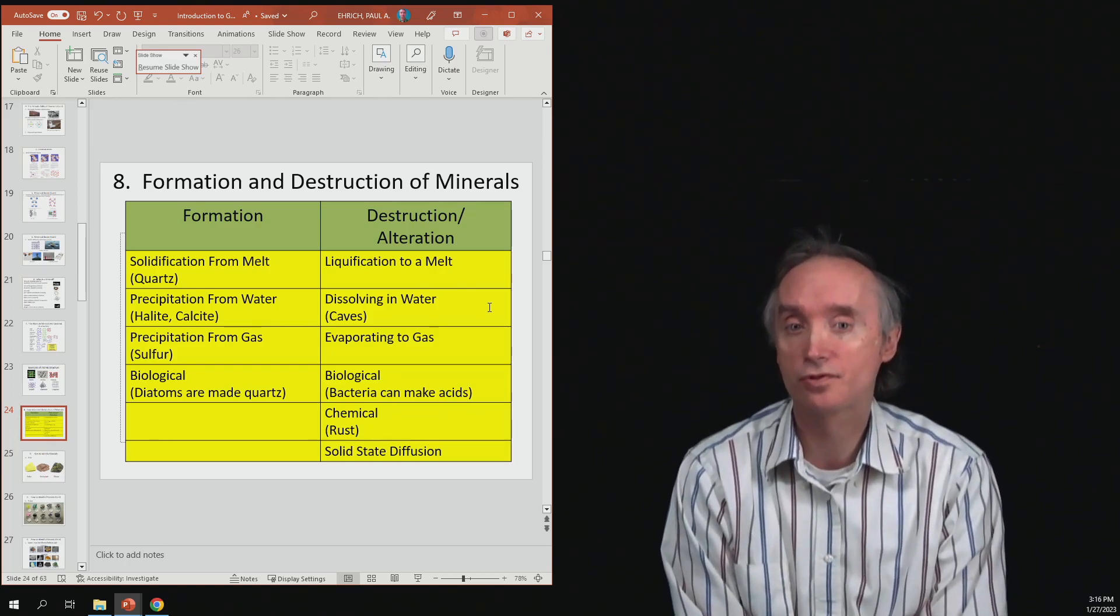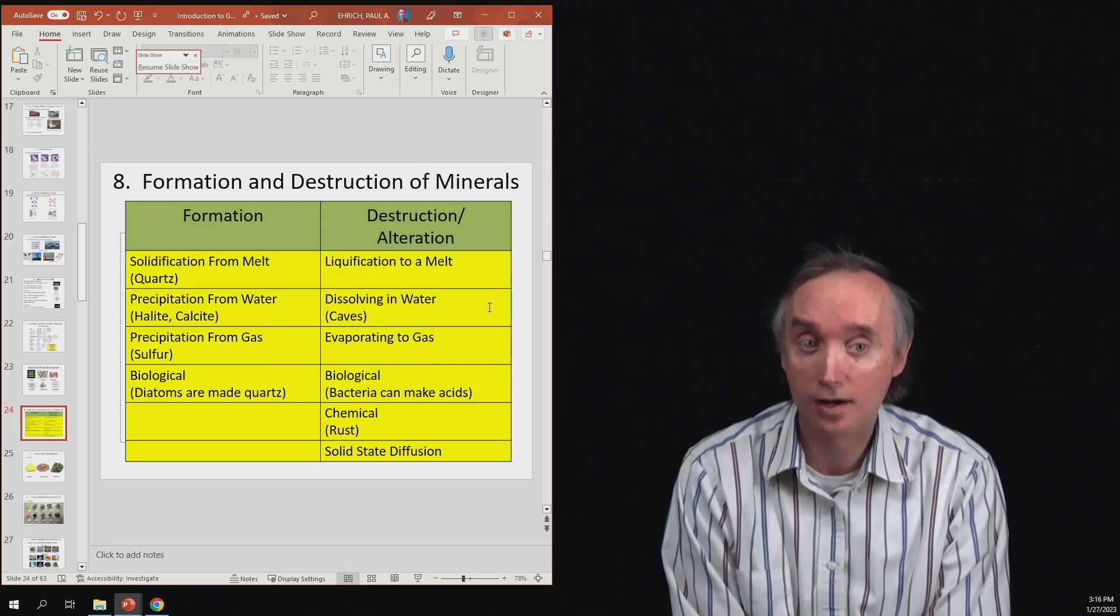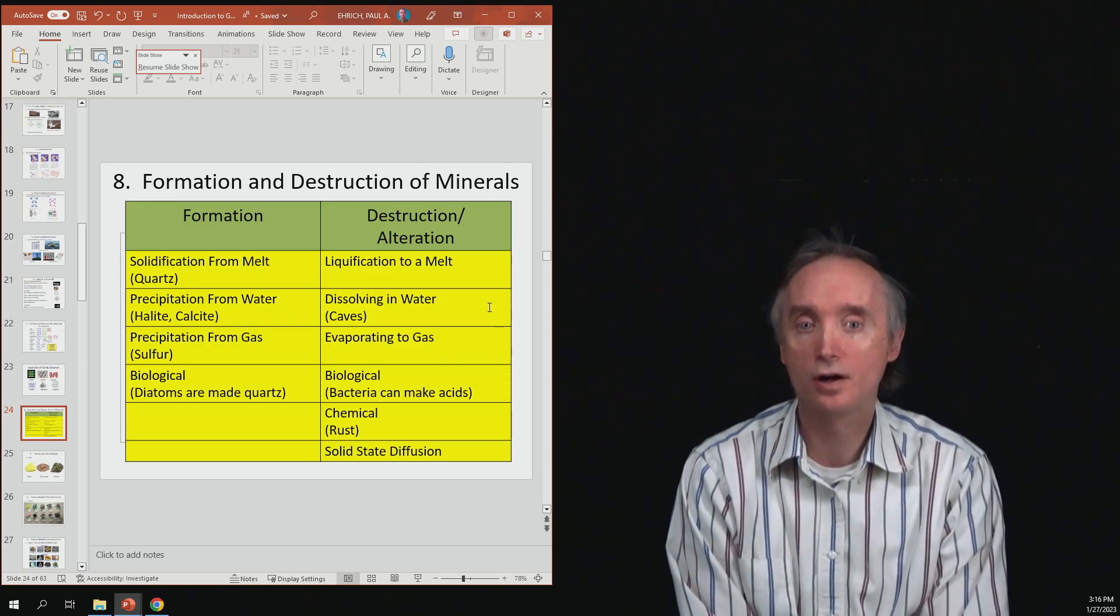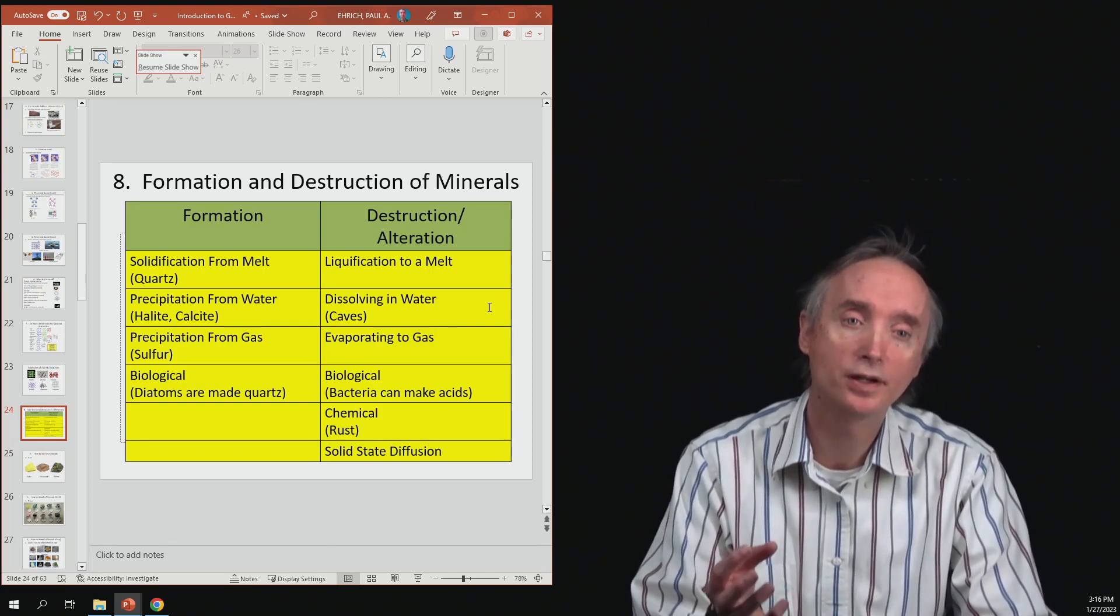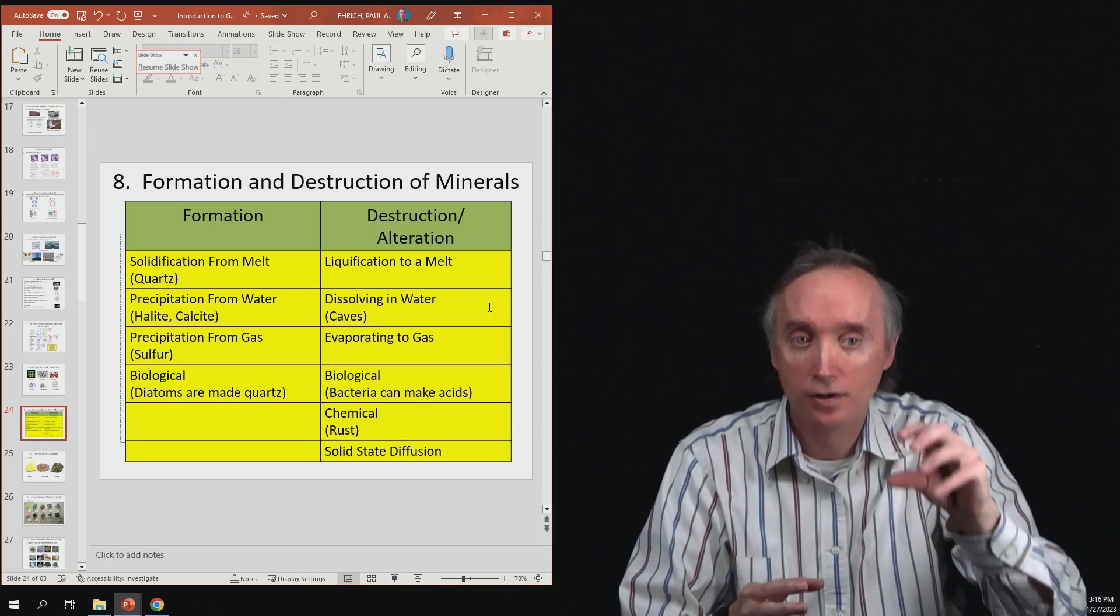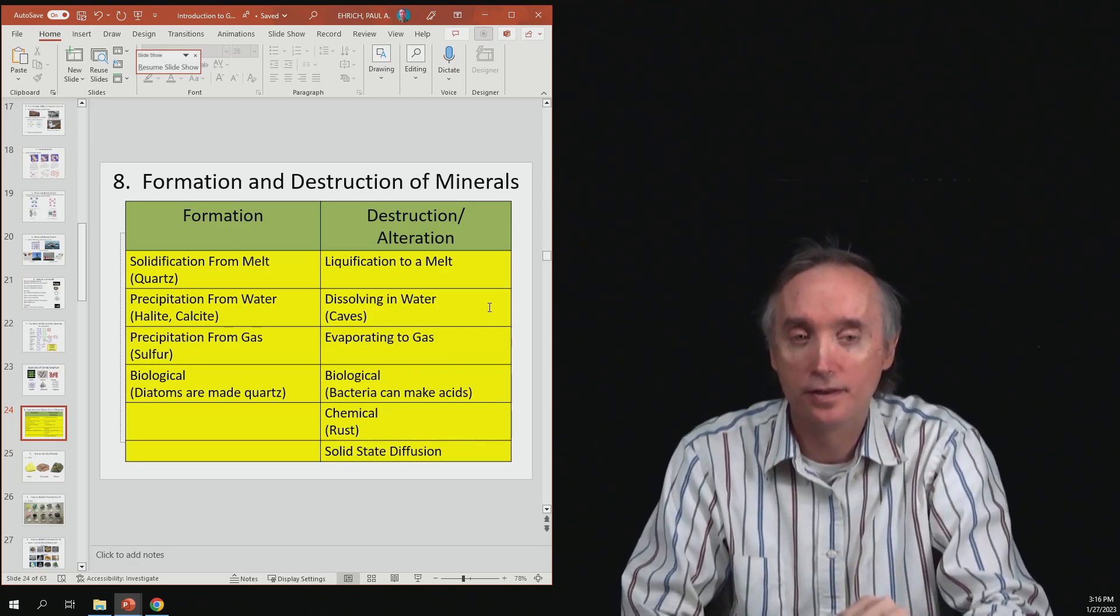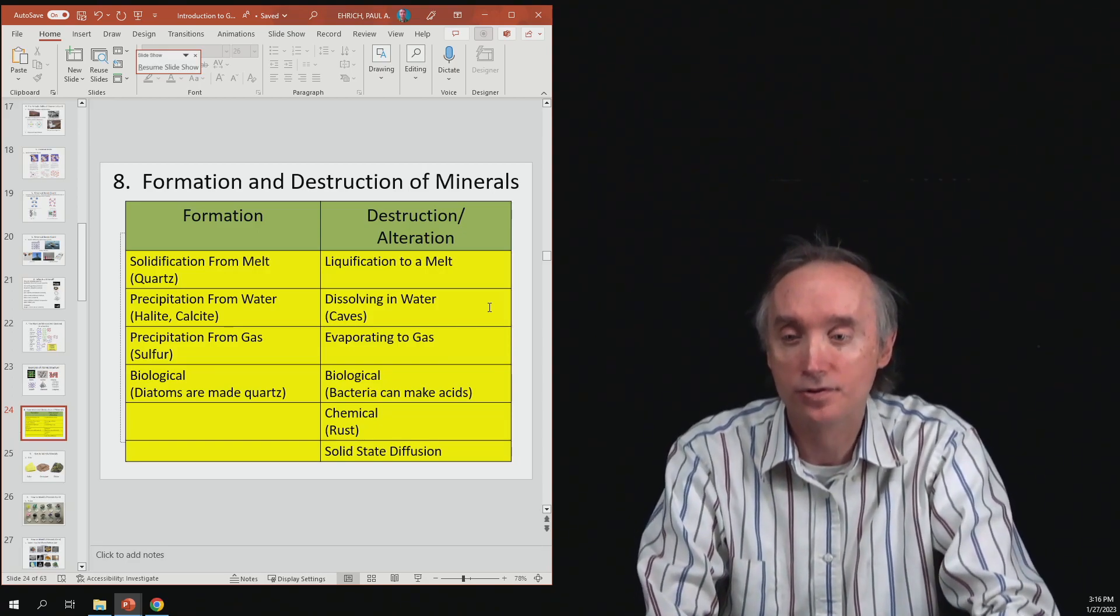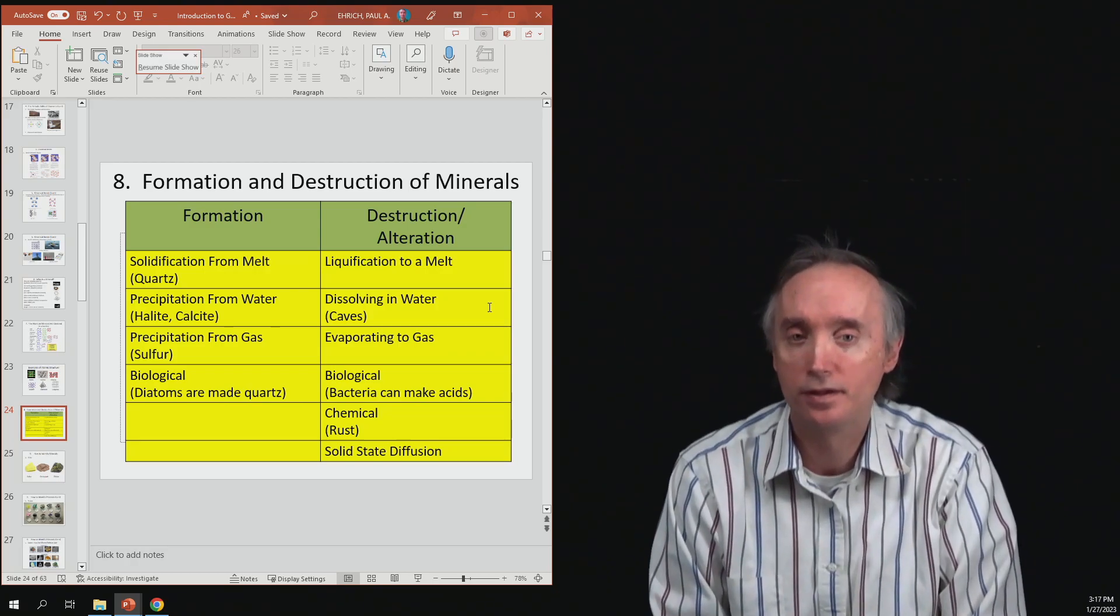Another way of destroying a mineral is chemical. So, an example of that would be rust. So, oxygen mixes with iron to make rust. And then there's also another one called solid-state diffusion, in which you have a mineral, and then what can happen is when it's under pressure or it's heated up a little bit, those atoms have the ability to kind of move one atom at a time through that material. And so, when those atoms move, it changes the internal structure of the mineral and it can alter the identity of the mineral. So, those are some different ways of making a mineral and then destroying a mineral.